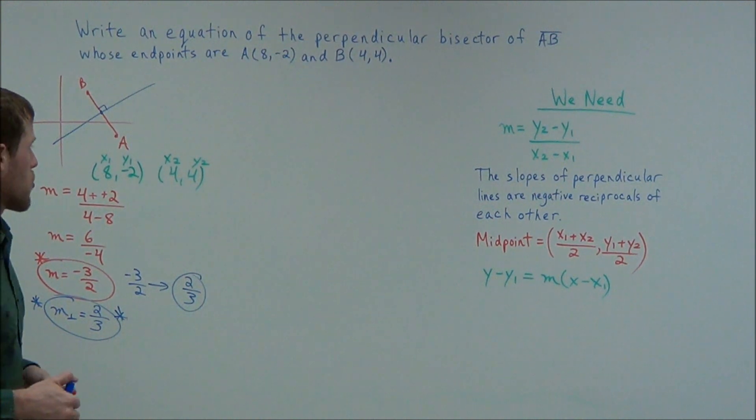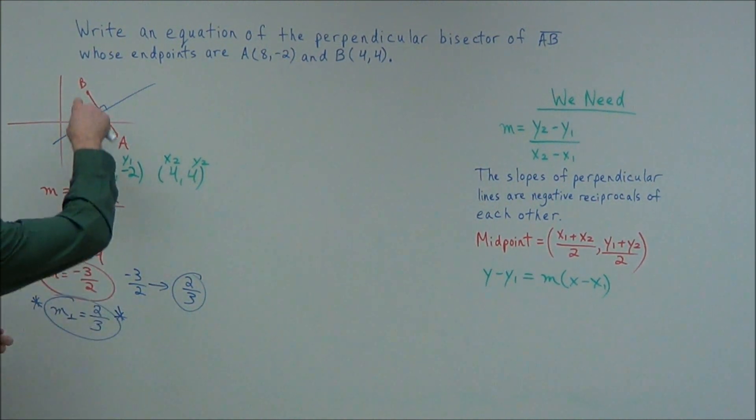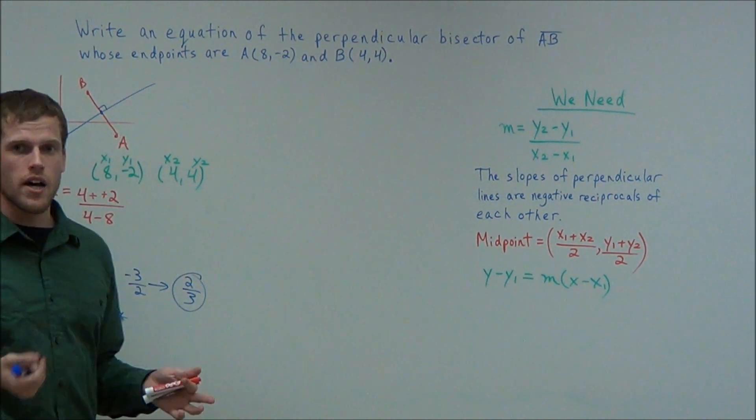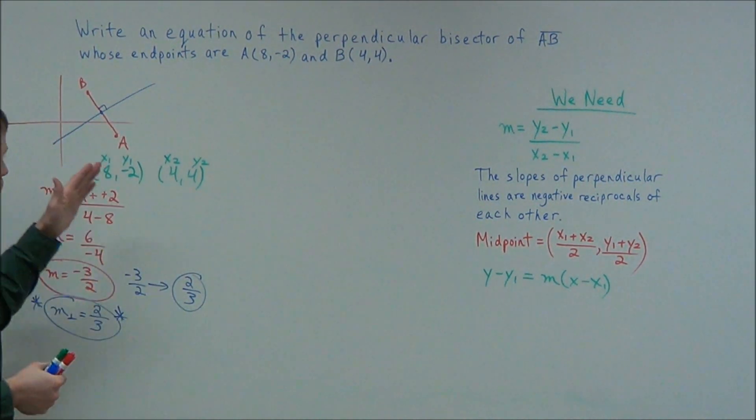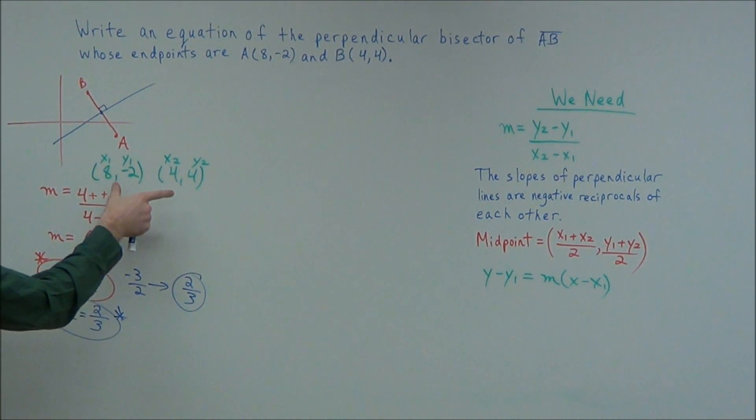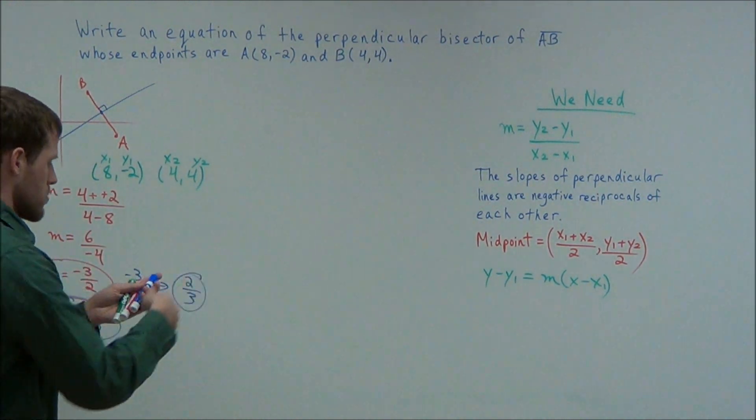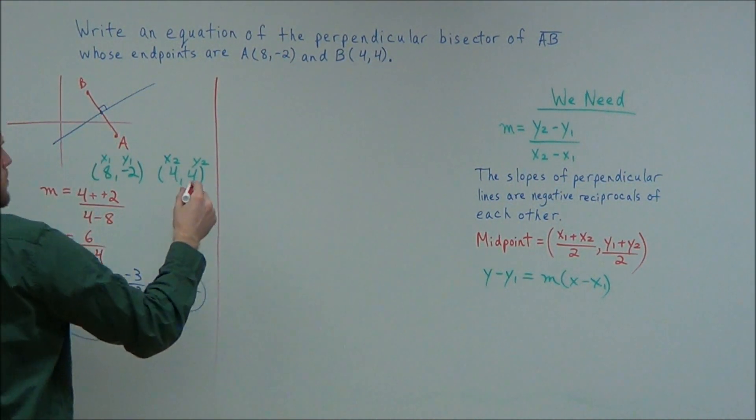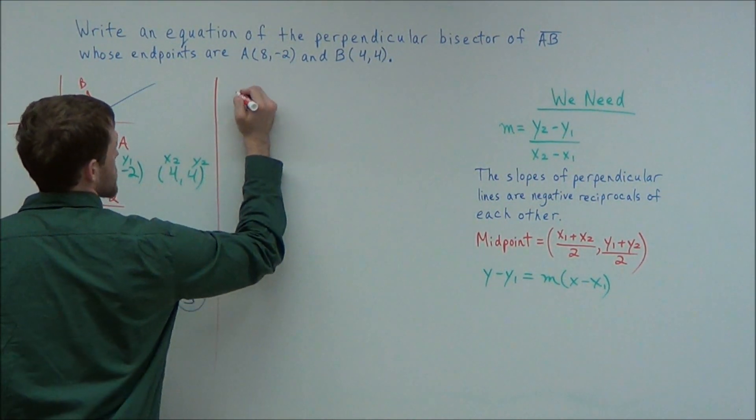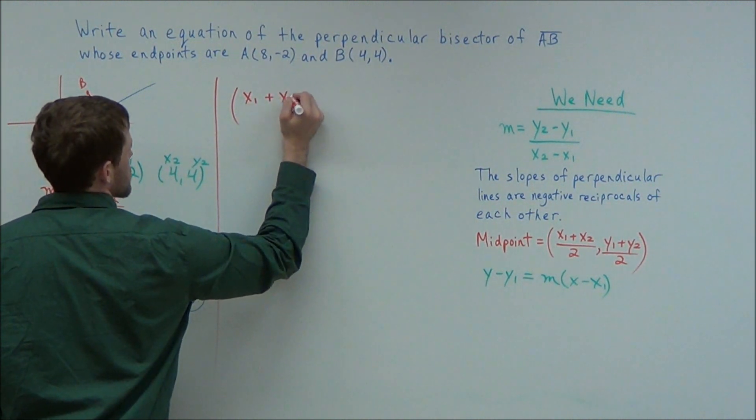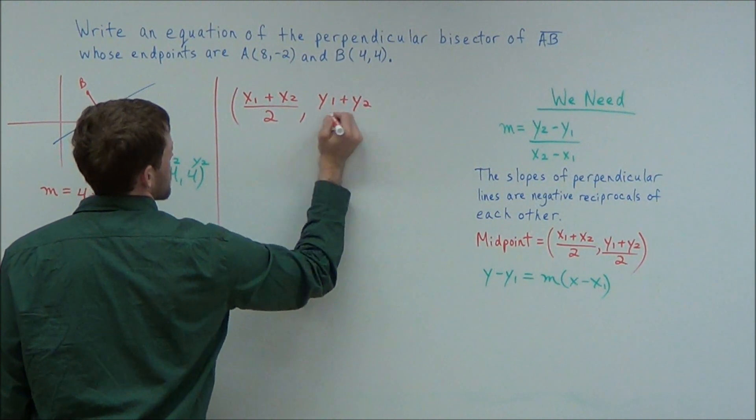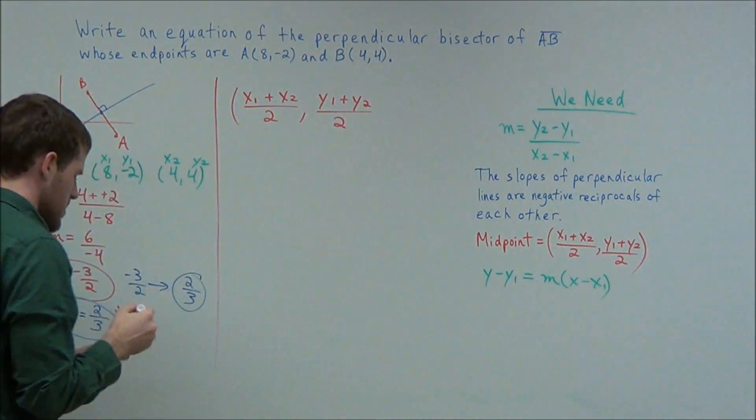So now next, in order to find a point that's on our line, notice that the only point on AB that's on our new line is the midpoint. Because remember, it cuts the line in half, and the middle of the line, or the halfway point, is the midpoint. So what we need to do is, we're going to find the midpoint of the original line segment. So now we look at the new equation. And midpoint, what we have is, x1 plus x2 over 2, y1 plus y2 over 2.